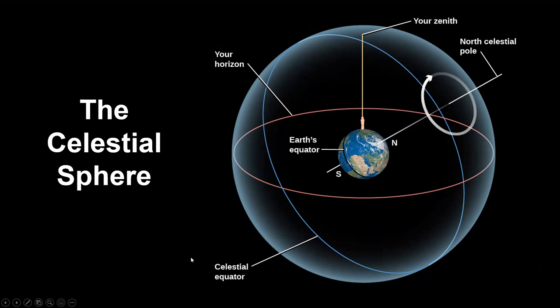If we project the earth's equator out onto this imaginary sphere, we get the celestial equator, and if we project the north and south pole upward, we get the north celestial pole and the south celestial pole. An observer located on the earth would have a point directly over them referred to as the zenith. From this point of view, the earth is blocking half the celestial sphere, so the red line representing your local horizon is basically showing you which part of the celestial sphere you can see.